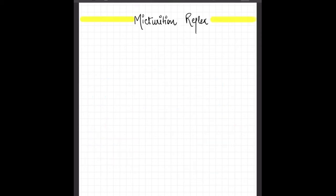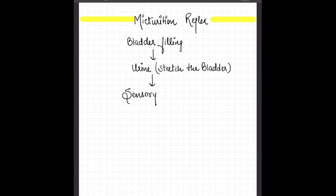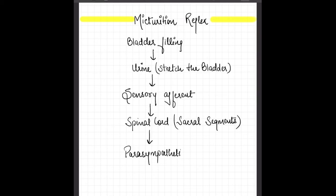Next, we are going to see micturition reflex. First of all, when the bladder is filled, the urine stresses the bladder. And while stretching the bladder, the stretched bladder sends the signals, sensory afferent signals to the spinal cord. And the spinal cord sacral segments send the signal to the parasympathetic supply. And parasympathetic output comes and facilitates the micturition.